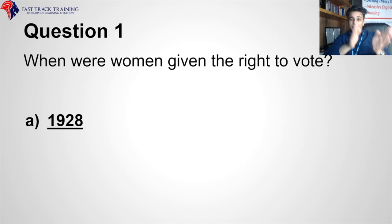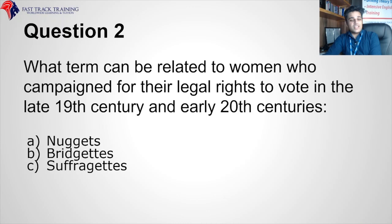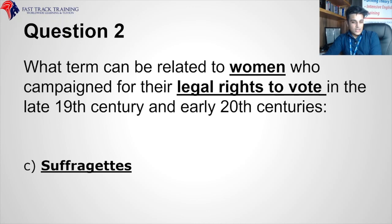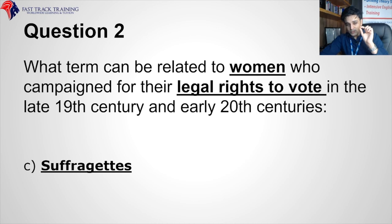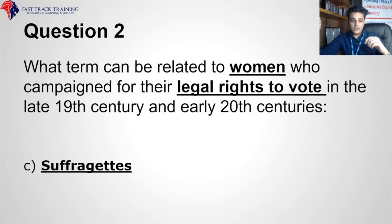What term relates to women who campaigned for their legal rights to vote in the late 19th and early 20th centuries — nuggets, bridgettes, or suffragettes? The correct answer is suffragettes. Tip: don't read everything — just pick out the key terms: women, legal rights, suffragettes. No matter how they word the question, those key terms will always appear.